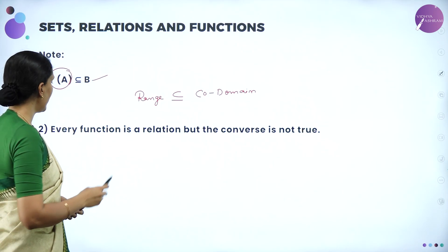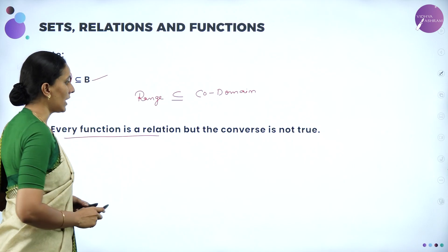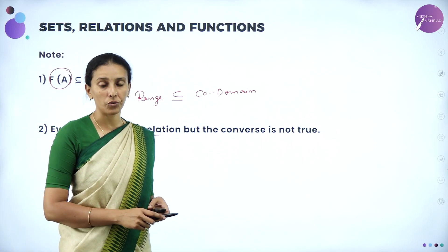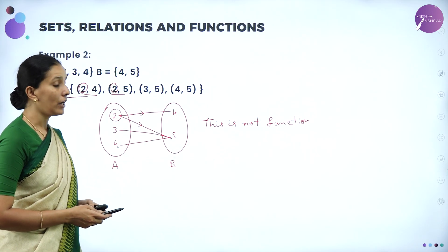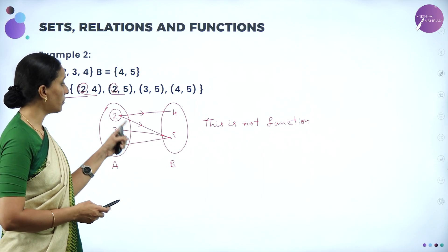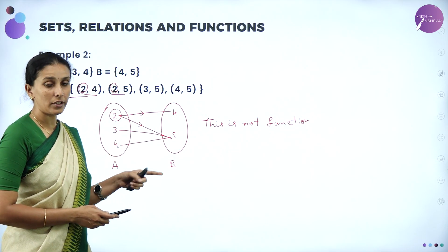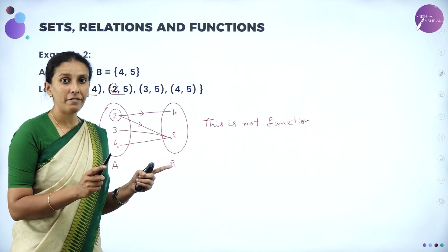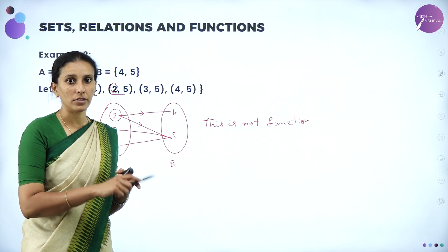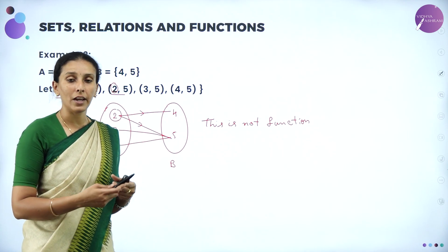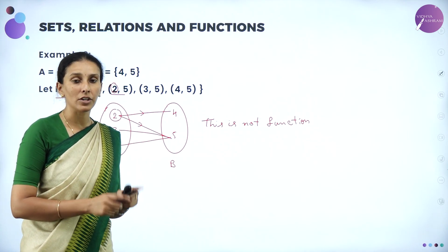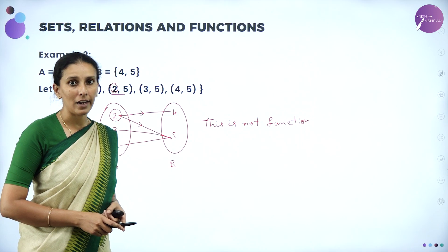The next condition is: every function is a relation, but the converse is not true. We have seen an example where something is not a function but is a relation, while every function must be a relation. So all relations cannot become functions, but all functions are relations.